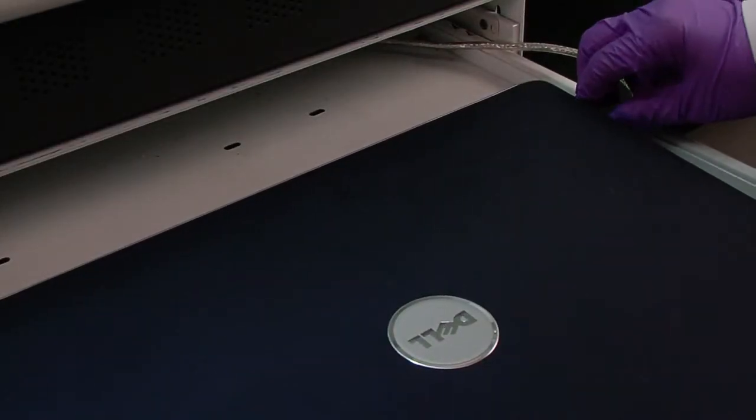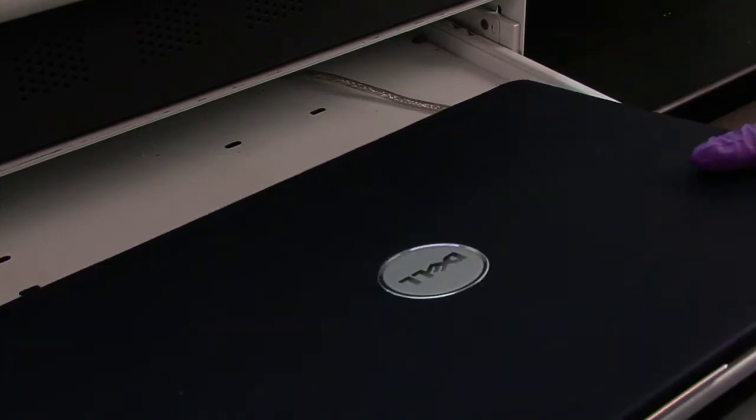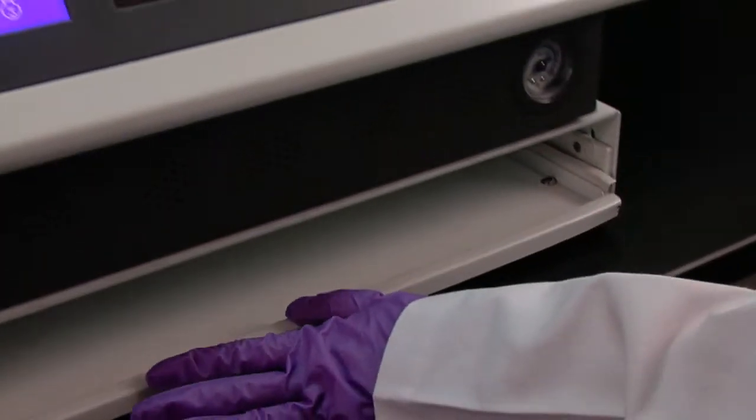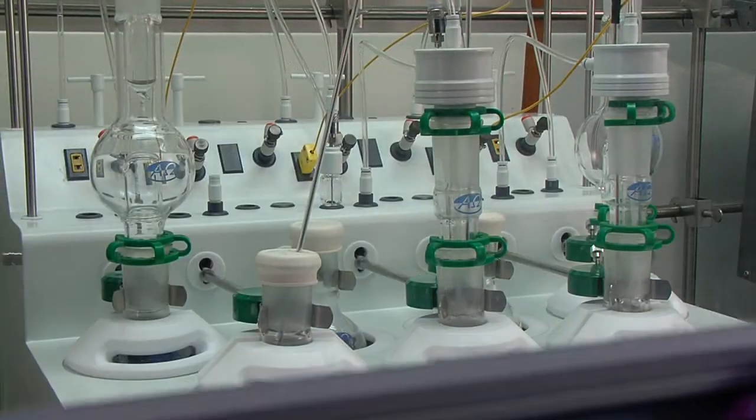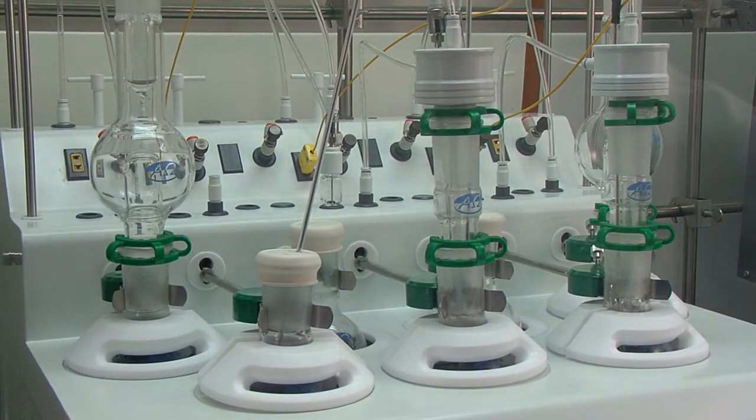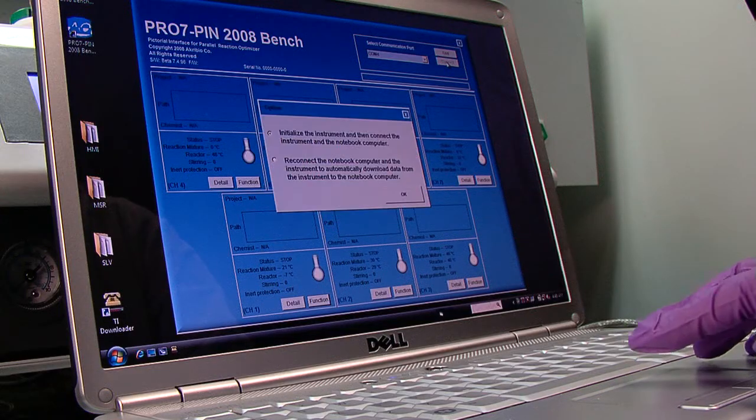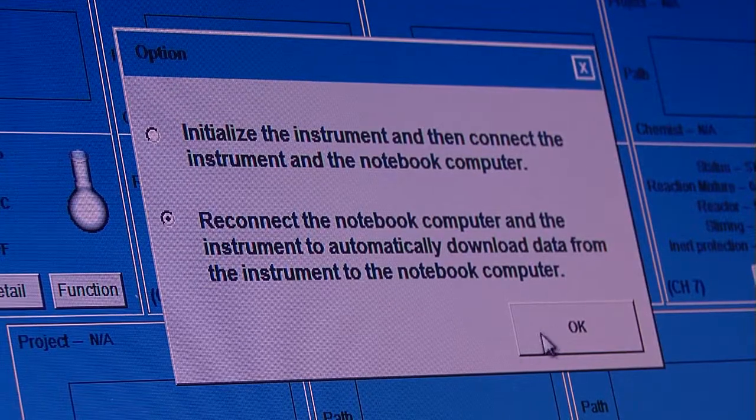After setting parameters, if desired, you can unplug the computer and take it away. Pro7 then runs by itself because it has built-in CPUs and memory chips. Once the computer is reconnected, all the data can be retrieved from Pro7.